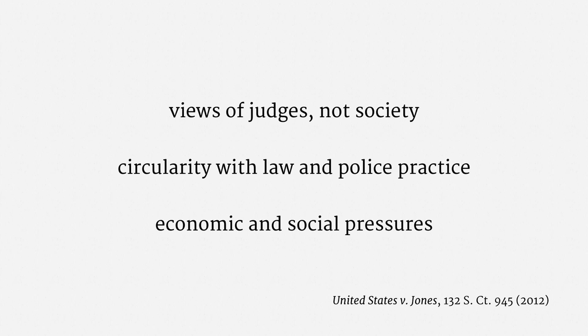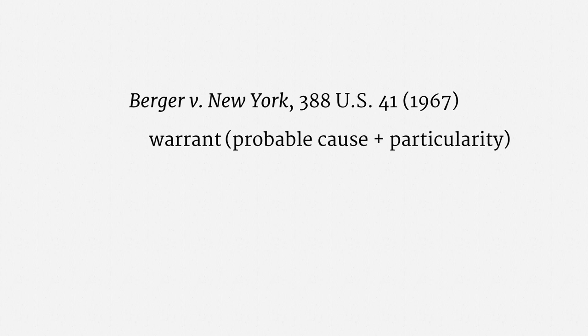Since Katz, it has been clearly established that ordinary police wiretapping of phone conversations is covered by the Fourth Amendment. In a companion case to Katz — Berger v. New York — the Supreme Court suggested what the Fourth Amendment requires for an ordinary police wiretap, indicating a number of safeguards would be required. The basic ingredient is a warrant, which comes with the usual probable cause and particularity requirements. In this context, that means probable cause that the phone conversation will provide evidence of a crime, and particularity about which phone conversations to intercept.